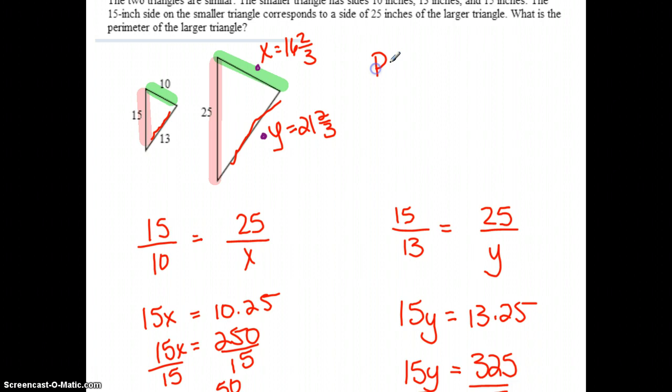To find the perimeter, you've got to add those three sides all together. If I add them all up, my perimeter is going to be 63 and one-third inches.